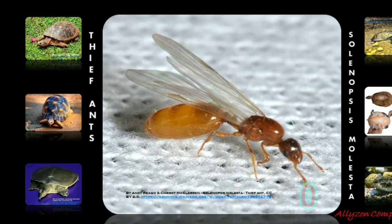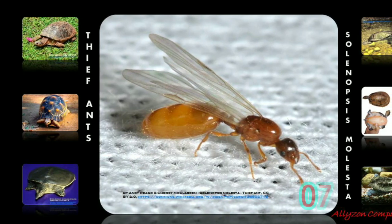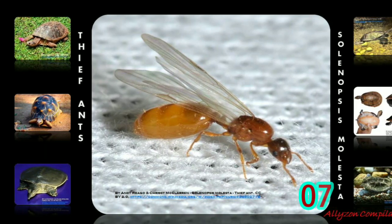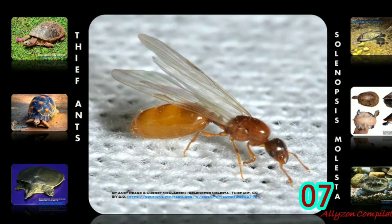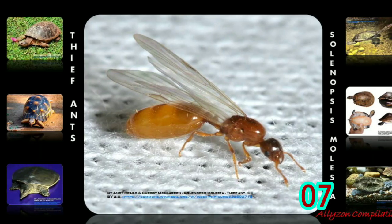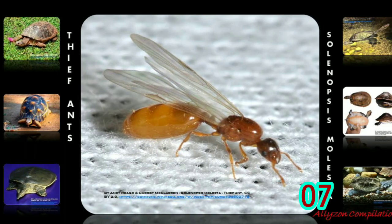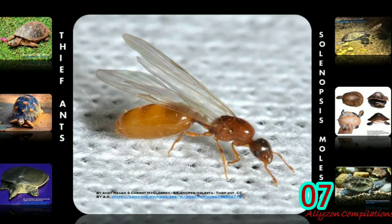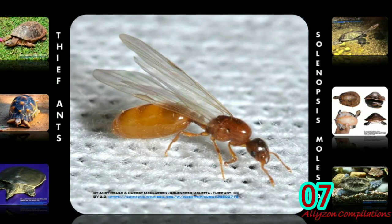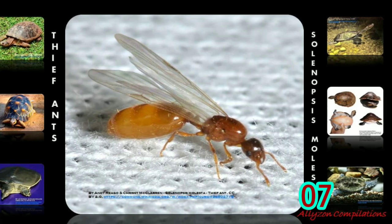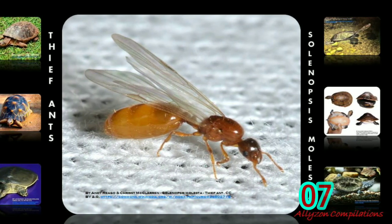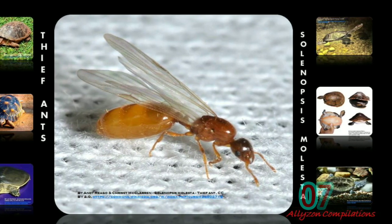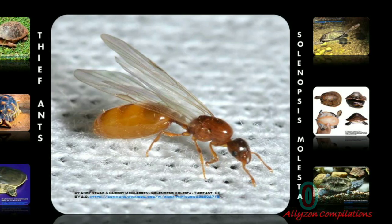Thief ants. Solenopsis molesta is the best-known species of Solenopsis thief ants. These ants, which include the majority of species within the genus Solenopsis, get their names from their habit of nesting close to other ant nests, from which they steal food. They are also called grease ants because they are attracted to grease. Thief ants are considered to be dangerous — they forage for dead insects, rats, and rodents outside. When they enter your home, they can transmit serious diseases and contaminate your food sources. They also serve as intermediate hosts for poultry tapeworm.